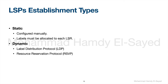How can we establish LSPs? We have two ways to establish LSPs: static or dynamic. Static means configuring the LSPs manually, so labels must be allocated to each LSR on the network. This process has to be created all over the MPLS network. This way of configuring LSPs in a static way is not scalable and is not suitable for large MPLS networks.